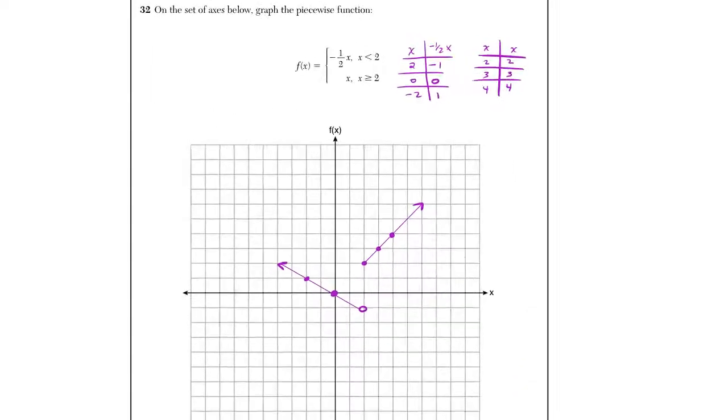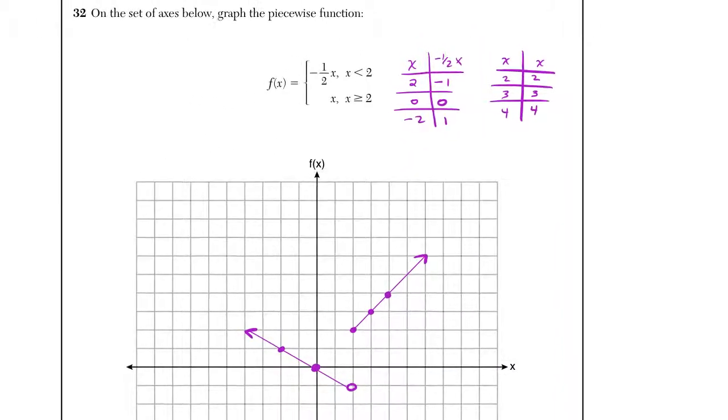So with piecewise functions, I like to make mini tables. So for my mini tables here, I'm looking at my domain to tell me what x values I should use to graph. If you're curious, I do have my first value of a 2. Why am I kind of skipping some? Being that it's 1 half, I'm skipping odd numbers as to avoid any decimals or fractions.